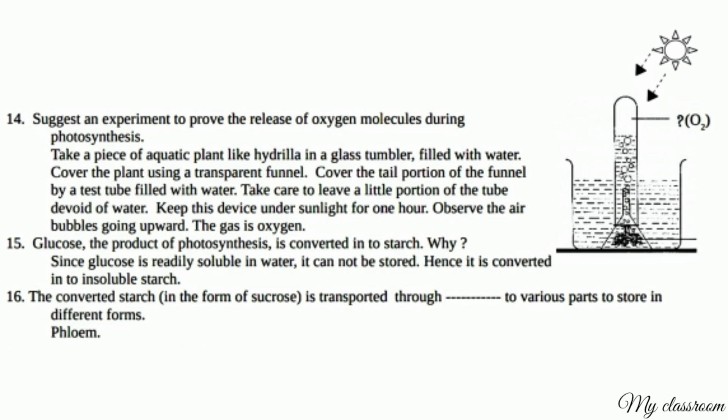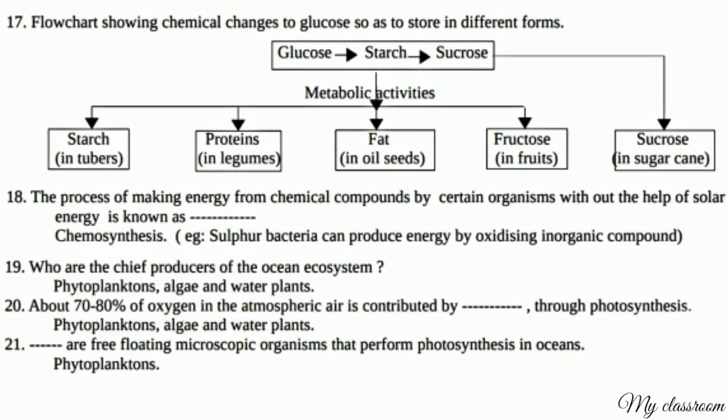The product of photosynthesis, glucose, is converted into starch. Why? Since glucose is readily soluble in water, it cannot be stored. Hence it is converted into insoluble starch. The converted starch in the form of sucrose is transported through the phloem to various parts to be stored in different forms.